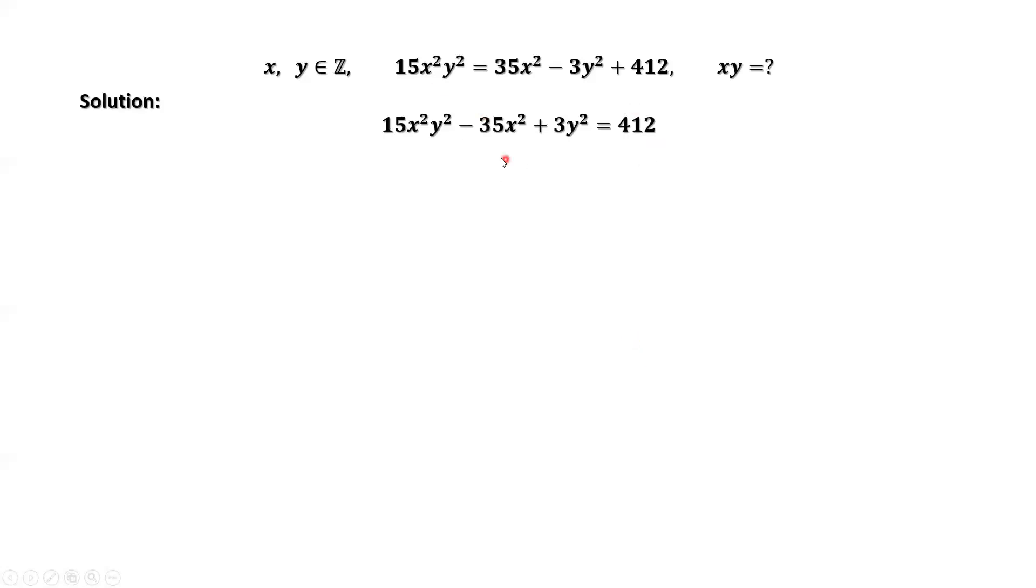This is the given condition. 5x² is the common factor of the first two terms. We can factor it out. Then we have inside the parentheses 3y² - 7. Here we also have 3y² minus 7. Then we subtract 7 from both sides of this equation.